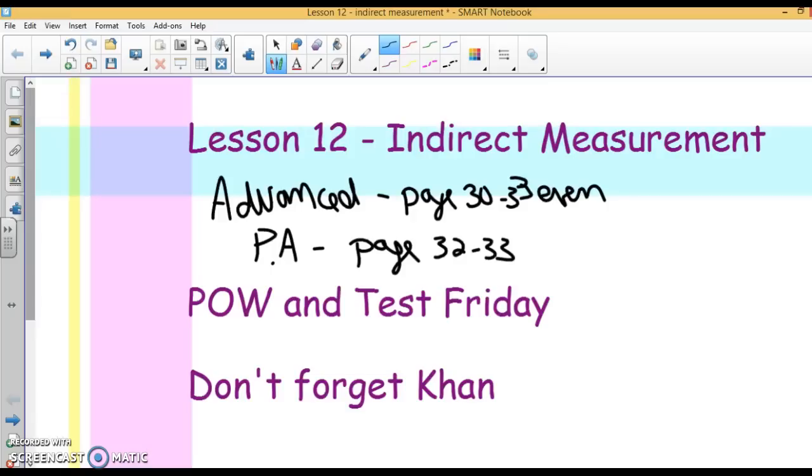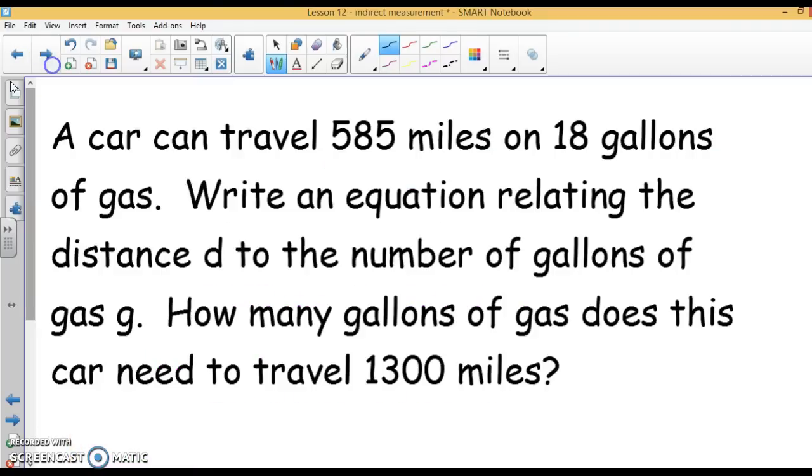Alright, the lesson we are talking about today is the Proportions Unit Lesson 12 Indirect Measurement. If you are in advance, this lesson goes along with Lesson 11, and the homework for that is page 30 to 33. If you are in Regular 3 Algebra, this is a single lesson, and the homework is page 32 and 33.